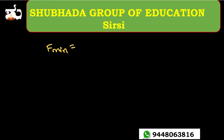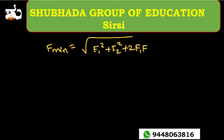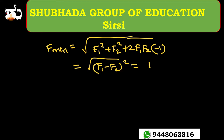For minimum: F_min equals square root of (F1 squared plus F2 squared plus 2·F1·F2·cos theta) with cos theta = minus 1, which gives F1 minus F2 equals 10 minus 6 equals 4 Newton. So the resultant value must lie between 4 and 16 Newton.